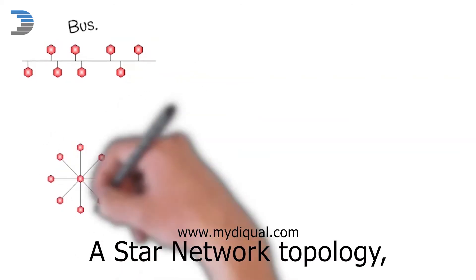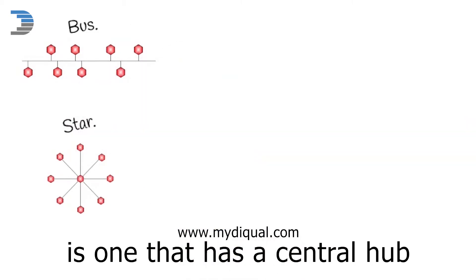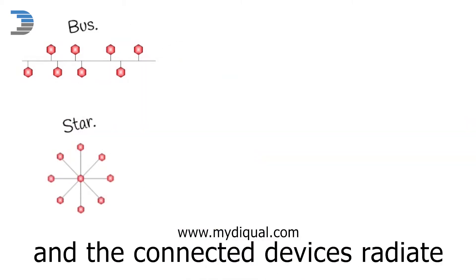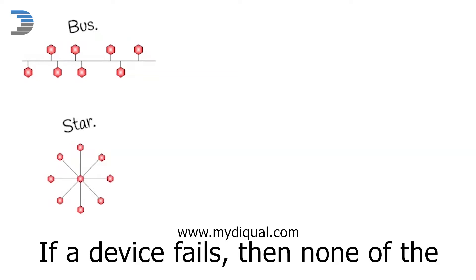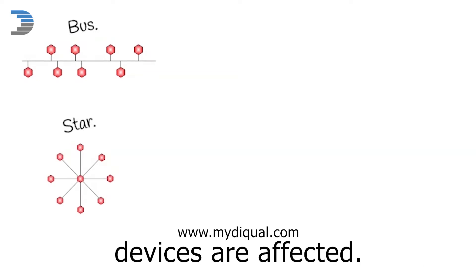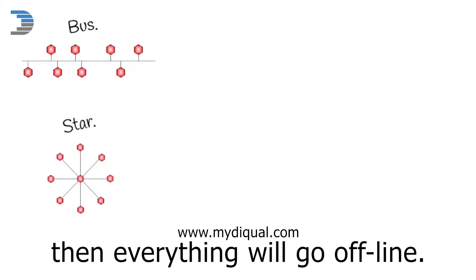A star network topology is one that has a central hub, and the connected devices radiate from that hub. If a device fails, then none of the other devices are affected. However, if the central switch fails, then everything will go offline.